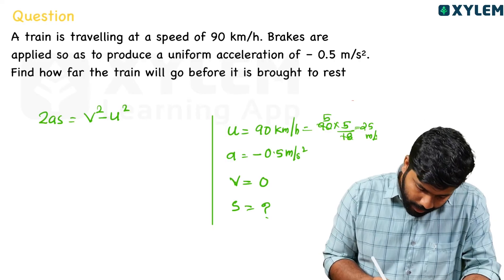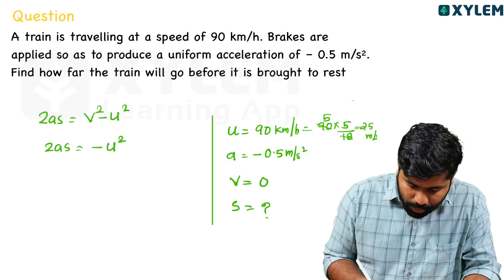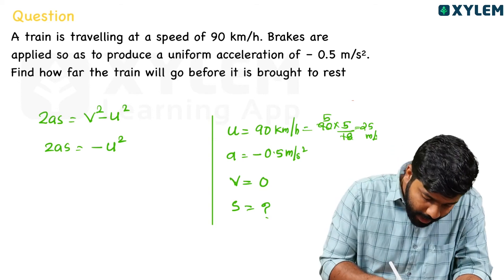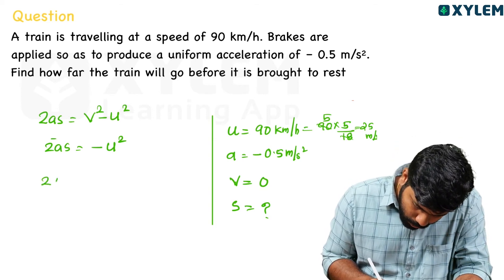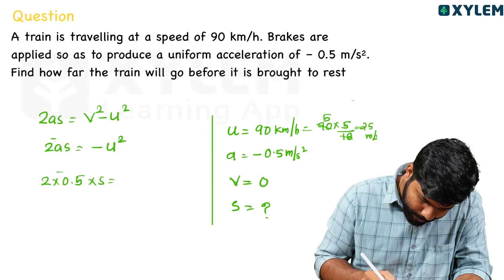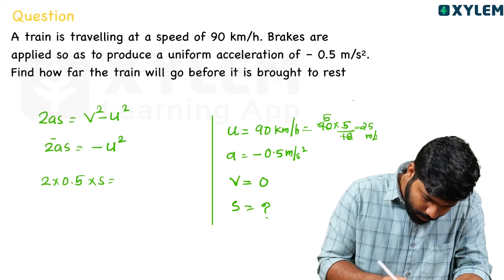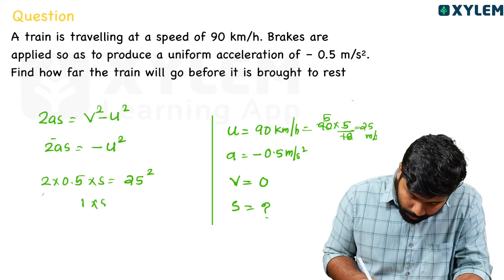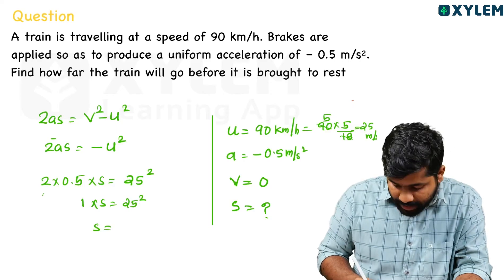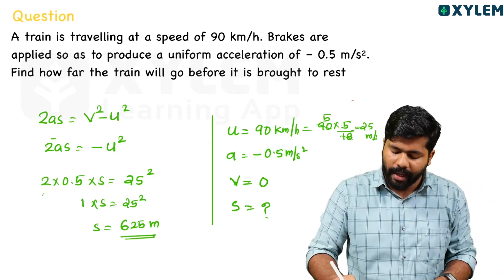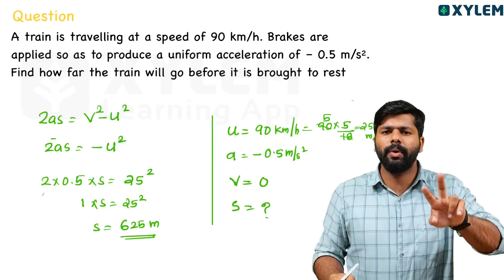Since time is not provided, we use the third equation of motion: 2a·s equals v² minus u². Substituting: 2 into minus 0.5 into s equals 0 minus 25². So minus 1 times s equals minus 625, giving s equals 625 metres. When t is not provided, use the third equation.